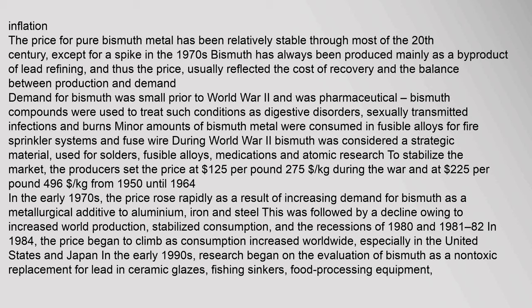The price for pure bismuth metal has been relatively stable through most of the 20th century, except for a spike in the 1970s. Bismuth has always been produced mainly as a byproduct of lead refining, and thus the price usually reflected the cost of recovery and the balance between production and demand. Demand for bismuth was small prior to World War II and was mainly pharmaceutical. During World War II bismuth was considered a strategic material; to stabilize the market, producers set the price at $1.25 per pound ($2.75 per kilogram) during the war, and at $2.25 per pound ($4.96 per kilogram) from 1950 until 1964.